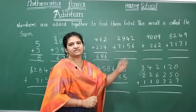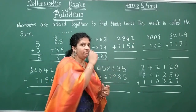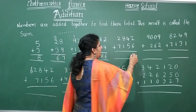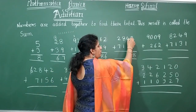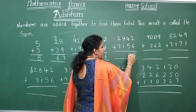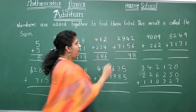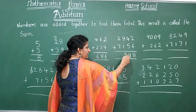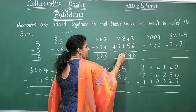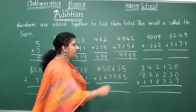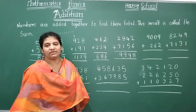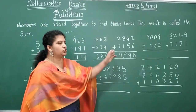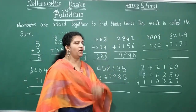Always start your addition from the units place. Two plus six equals eight. Four plus five equals nine. Eight plus one equals nine. Two plus seven equals nine. The answer is nine thousand nine hundred ninety-eight as the sum of these two numbers.